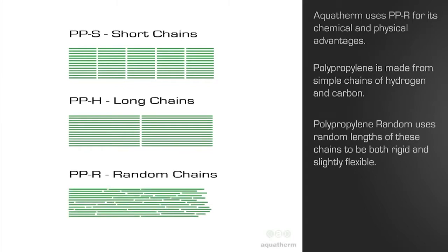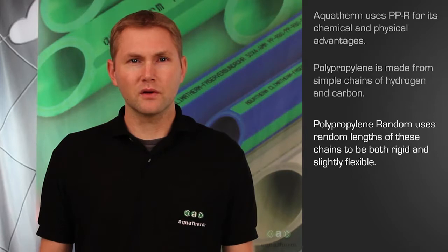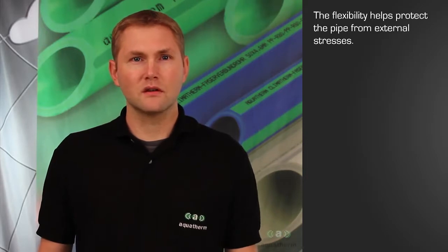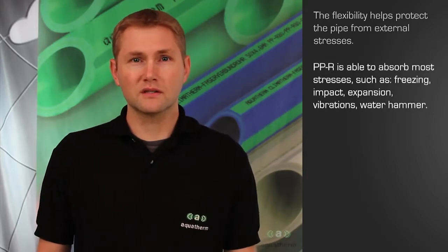Polypropylene random uses a mixture of long chains and short chains to create a material that is both rigid and flexible. The flexibility helps protect the pipe from external damage, such as freezing and impact. It allows the pipe to absorb stress that would otherwise damage other systems, including expansion stresses.